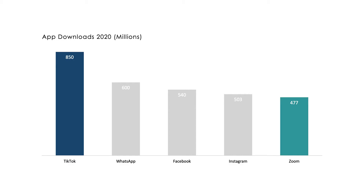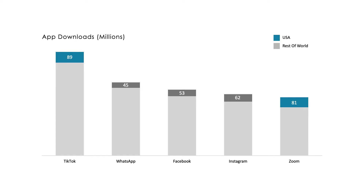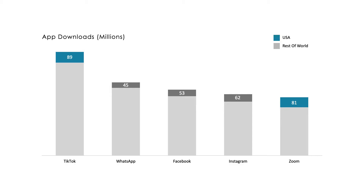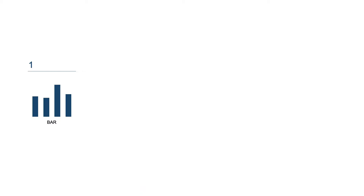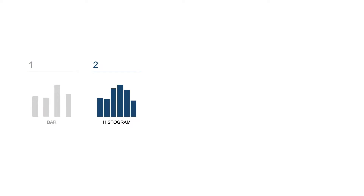Use stacked bar charts if you want to show part-to-whole — how much different elements contribute to an overall total. For example, we showed that TikTok was the most downloaded app, but using a stacked bar chart to break out US downloads, you still get the overall picture while also seeing that in the US the difference between the two is actually much smaller — which is probably why people thought Zoom was more popular. A warning though: keep stacked bar charts simple, as once they become too complicated, comparing components becomes almost impossible and they become more or less useless.